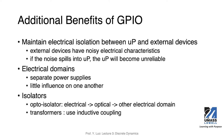One benefit of using GPIO is to maintain electrical isolation between the microcontroller and external devices. External devices may come from different vendors and have different electrical characteristics. They may generate noisy electrical signals, and if that noise spills into the microcontroller, the microcontroller will become unreliable and produce incorrect results — meaning you can't implement your state machines properly. That's why GPIOs are important to isolate the microcontroller from the external environment.